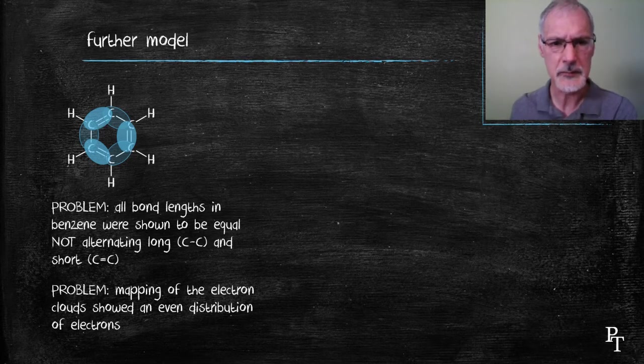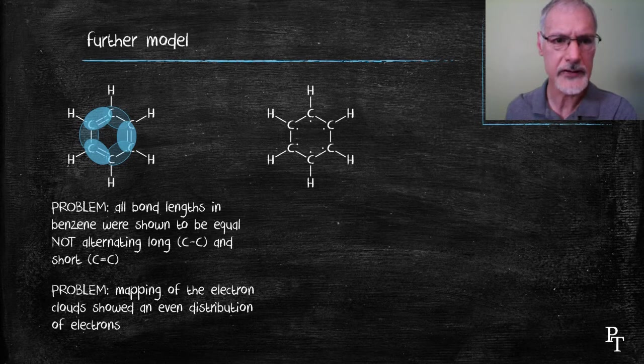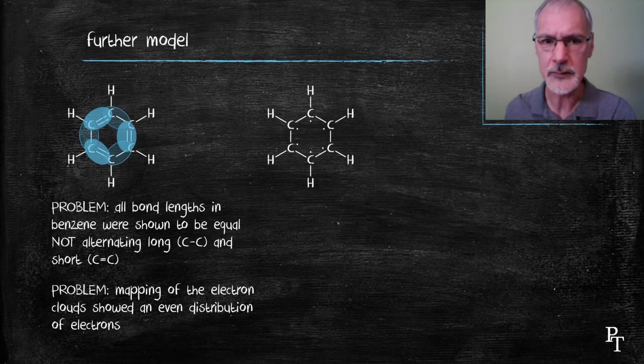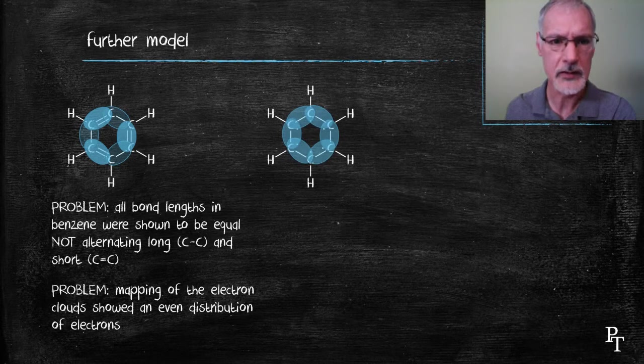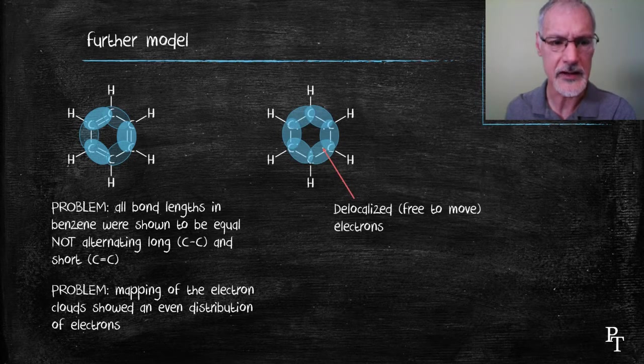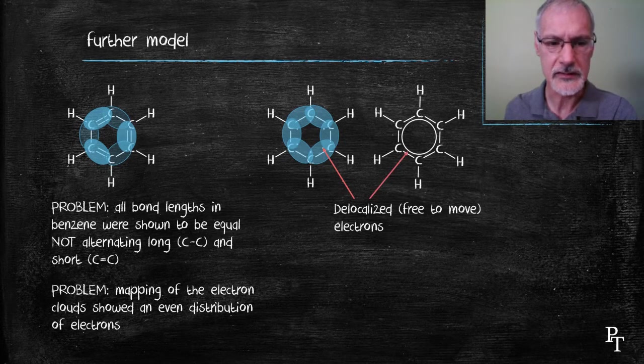So that model has been replaced with this one, where we have carbon making nothing but single bonds and we have that one electron that was used to make the multiple bond free to move around or delocalized. That would create clouds of equal density. This structure can also be depicted by using a ring in the center.